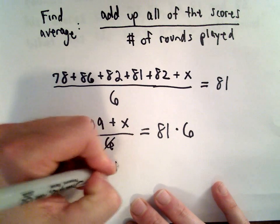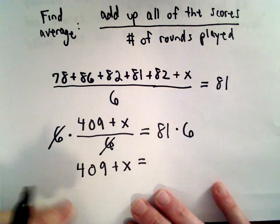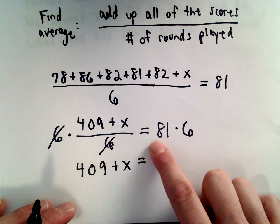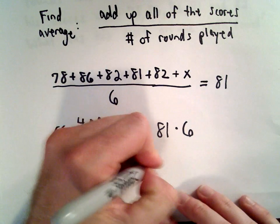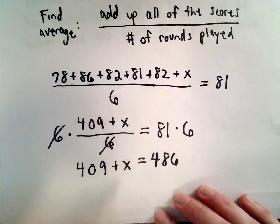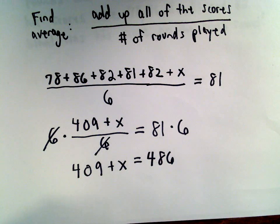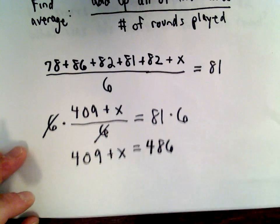This will simplify the left side. Now I've got 409 plus X equals, let's see, 81 times six. Six times eight is 48, six times one is six, so I believe that's going to give us 486. You can certainly use your calculator to figure that out.